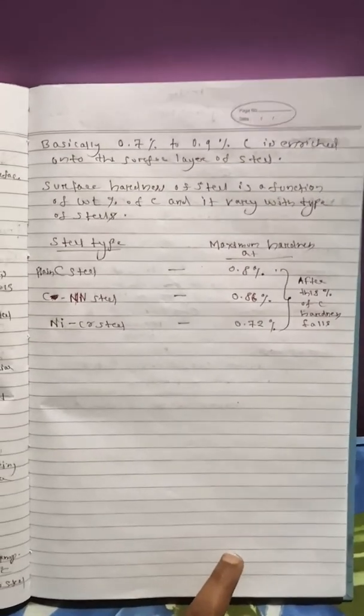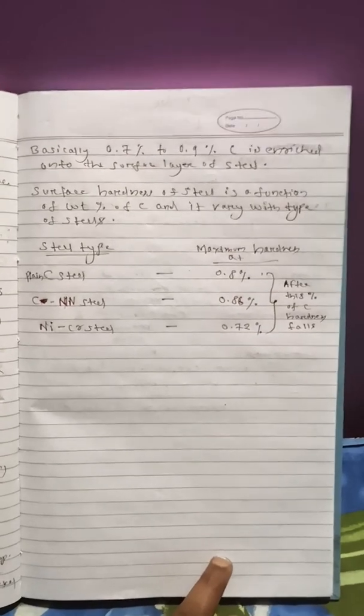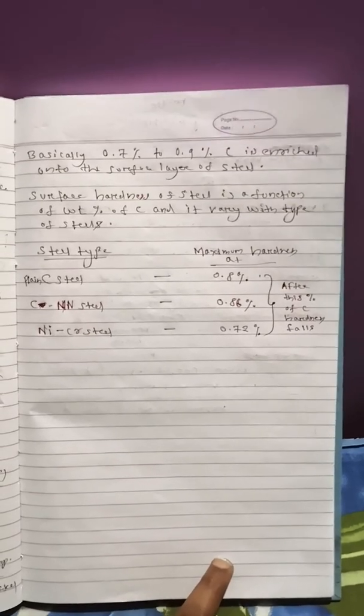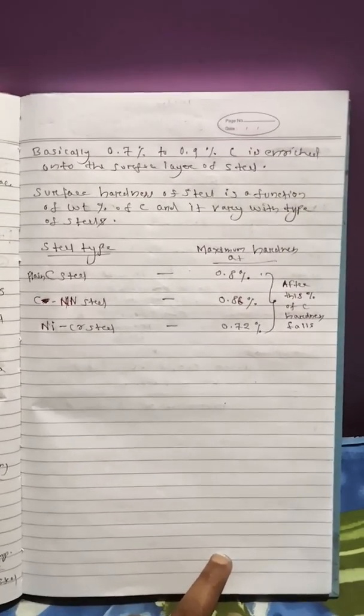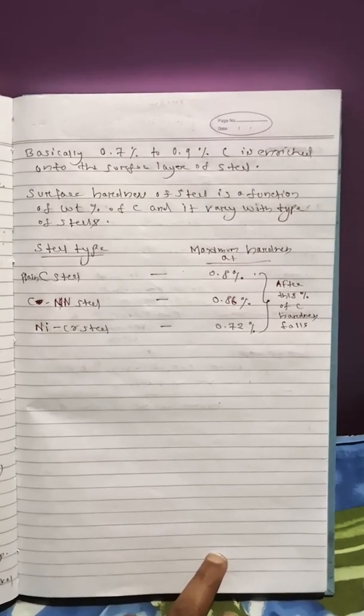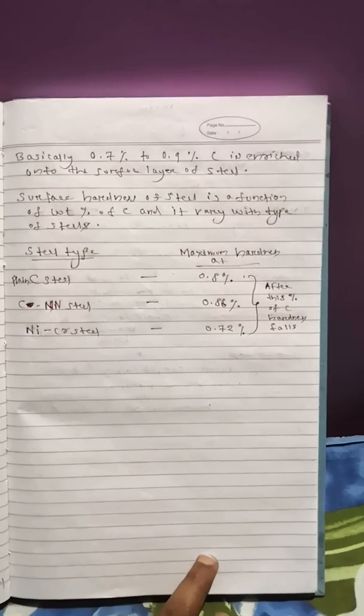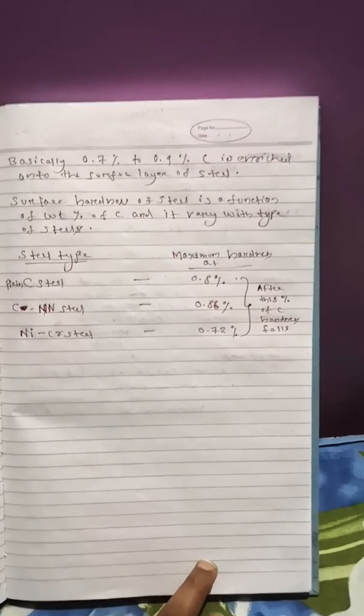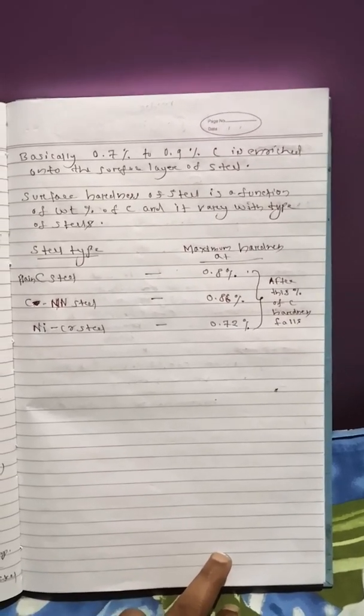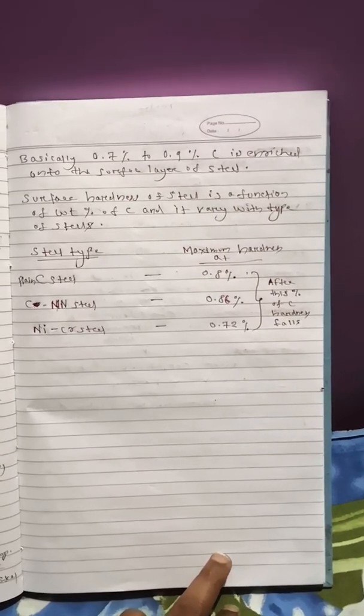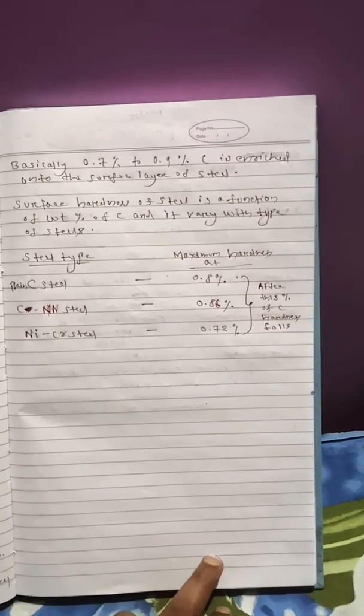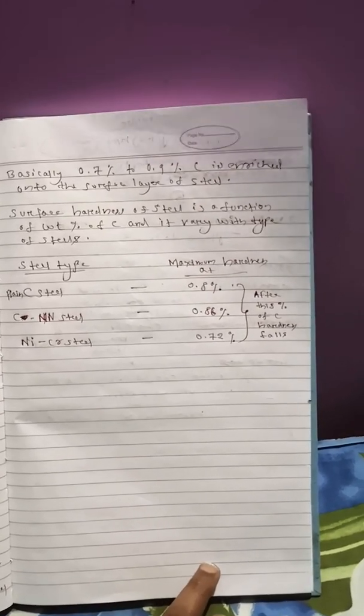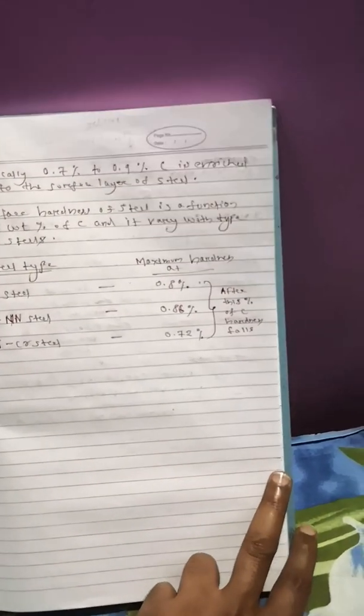So now there is a data we have, the steel types versus maximum hardness at a particular weight percentage. Plain carbon steel have maximum hardness at a carbon weight percentage of 0.8 percent. And if we have carbon manganese steel the maximum hardness is obtained at a carbon weight percentage of 0.86 percentage. This is because of presence of manganese the carbon percentage is increasing. And if we have nickel chromium steel it is again decreasing and maximum hardness is obtained at a carbon weight percentage of 0.72 percent. So above this weight percentage of carbon the hardness falls.